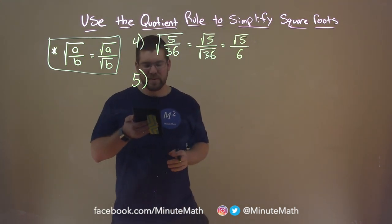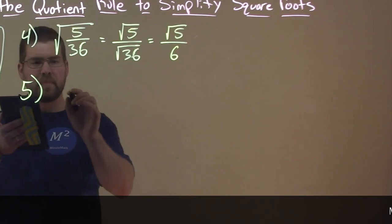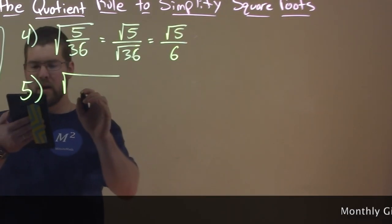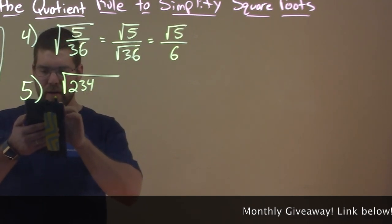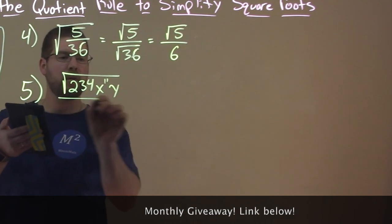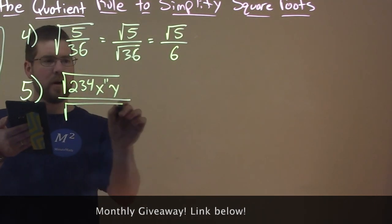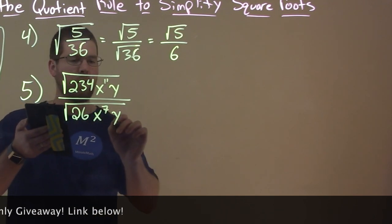So let's try another example here. And this one gets tricky pretty quickly. So let's say we have this, the square root of 234, x to the 11th power, y, over the square root of 26, x to the 7th, y.